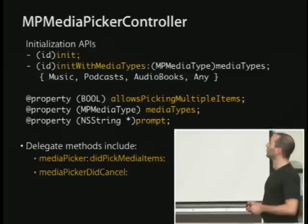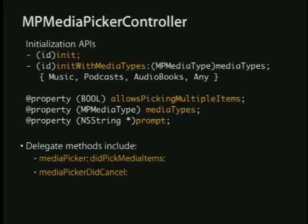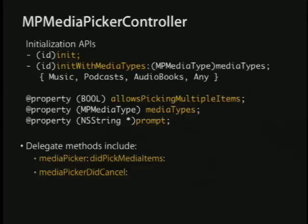The MP Media Picker Controller: initialize it with a media type — music, podcasts, or audiobooks. Present it modally. You can specify whether to allow multiple item selection. You can also provide a prompt. Delegate callbacks tell you when the user cancelled or when they successfully made a selection.